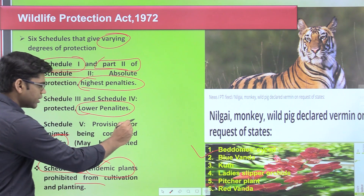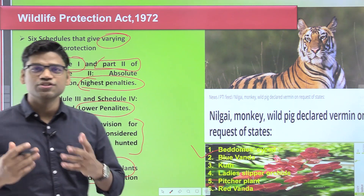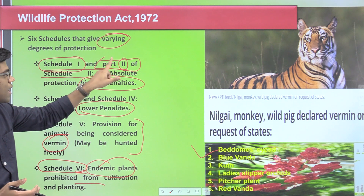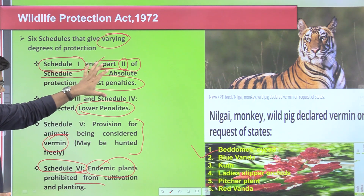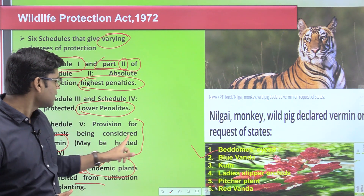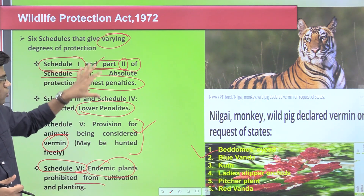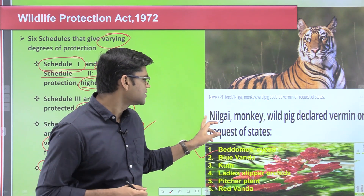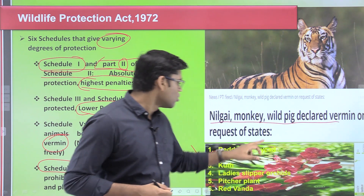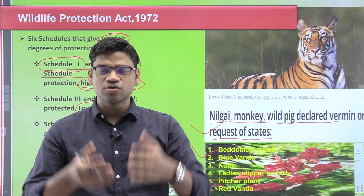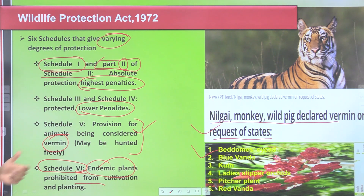An important thing is that these lists keep changing. Animals from Schedule 3, Schedule 4, and Part 1 of Schedule 2 — not Part 2 — can be transferred to Schedule 5 for a temporary period. Once transferred to Schedule 5, they become vermin, meaning they can be legally hunted. The authority to transfer these species lies with the central government, particularly the Ministry of Environment and Forest.